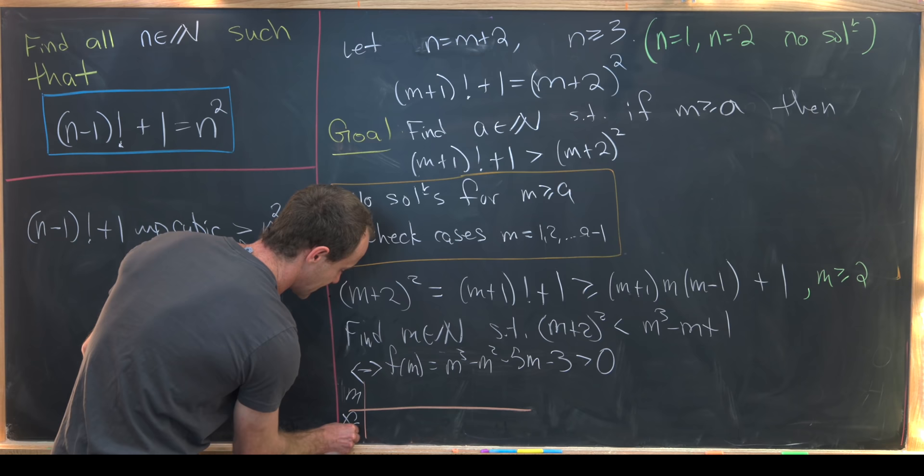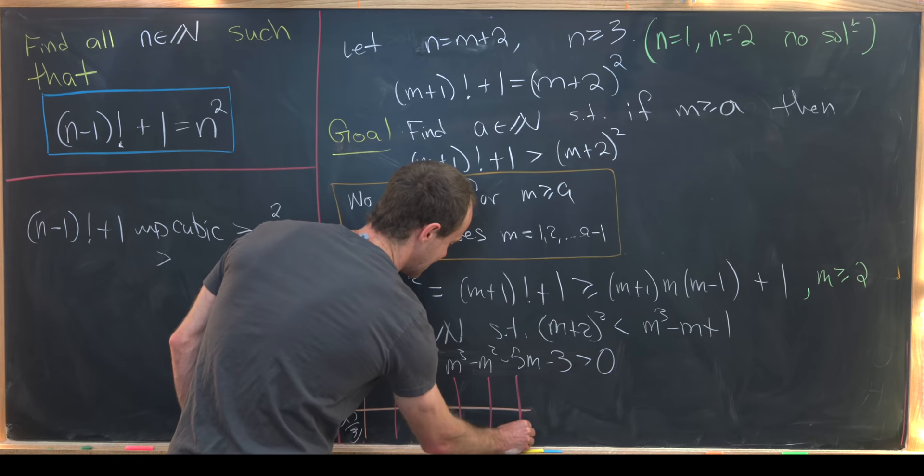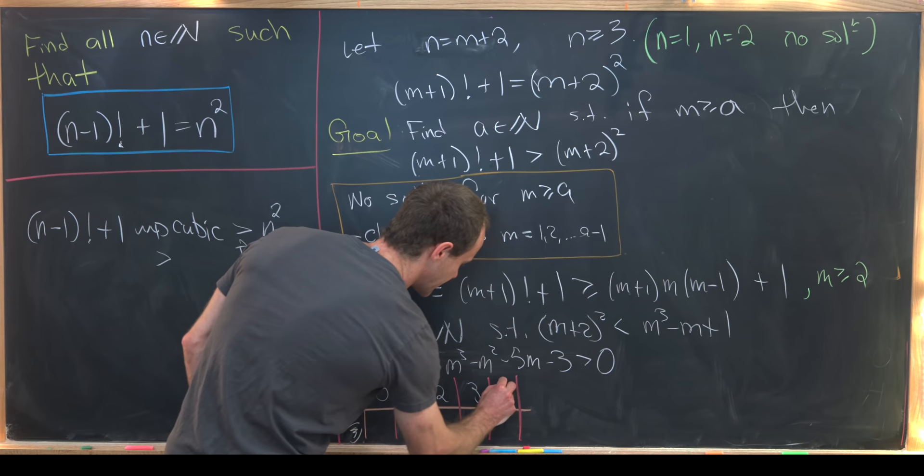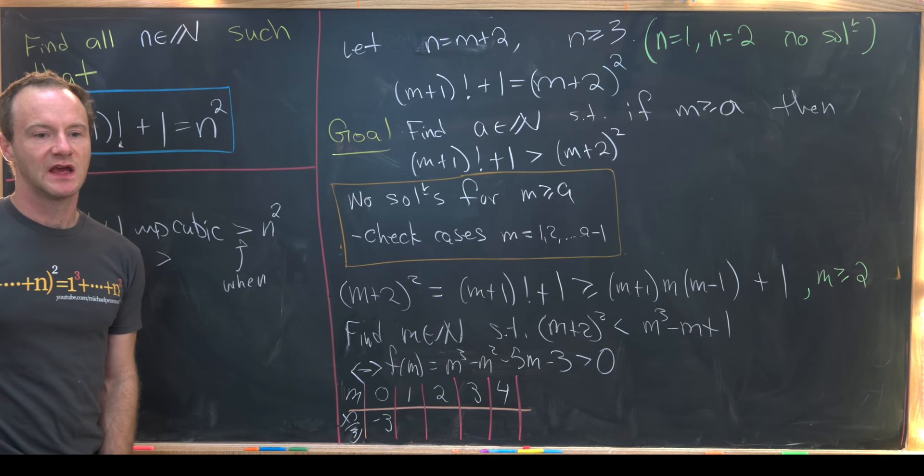So let's say this is our numbers m and this is our numbers f of m. We actually don't need many values in order to get a guess. So let's start here with m equals 0, 1, 2, 3, and 4.